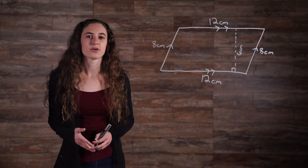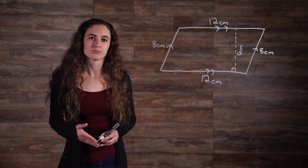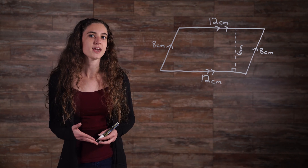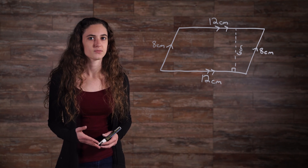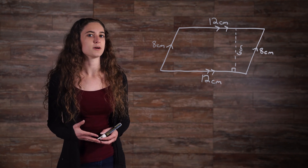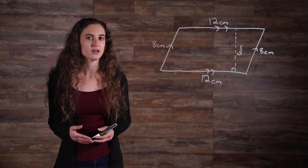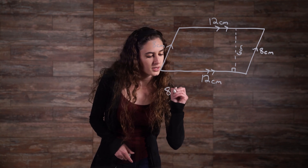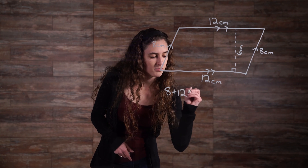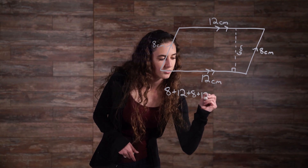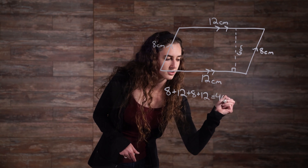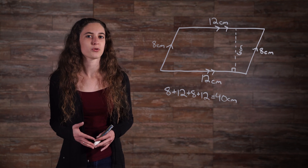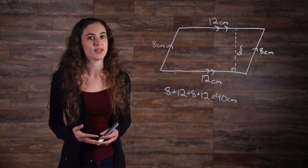Now let's find the perimeter. The perimeter is the distance around any object. So for any polygon, we can find the perimeter by simply adding all the sides together. Since we did the work of finding the measure of the top and left sides already, we just need to add 8 plus 12 plus 8 plus 12 to get 40 cm. We don't use the 6 cm measure at all for perimeter, but we will need it to find the area.